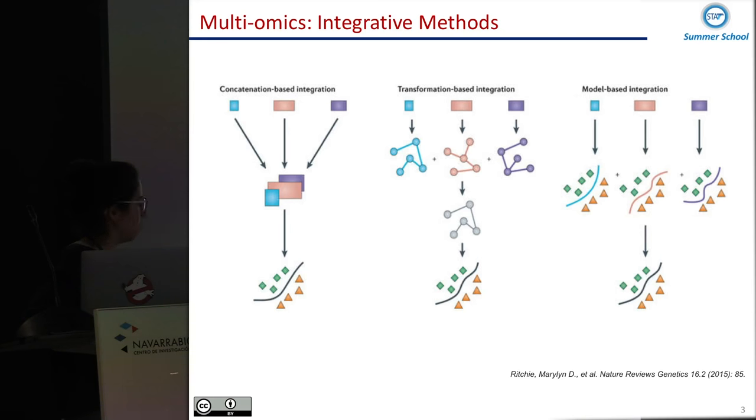Then try to apply some kind of statistical method to answer our question. Then there's another approach that is transformation-based integration methods, where you can apply a specific transformation from each one of the omics data sets, and then these transformations allow us to merge the data and answer the question.